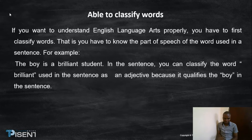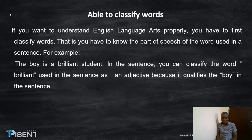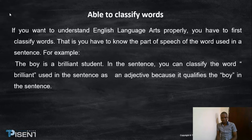Let's look at the first outline, which talks about being able to classify words in a sentence. If you want to understand English language arts properly, you have to first classify words — that is, you have to know the part of speech or the word used in a sentence. For example, 'Your boy is a brilliant student.' In the sentence, you can classify the word 'brilliant' as an adjective because it qualifies the word 'boy' in the sentence.